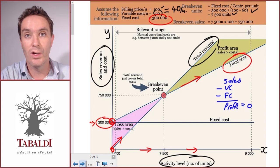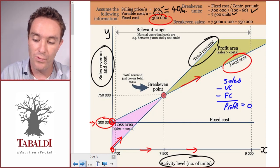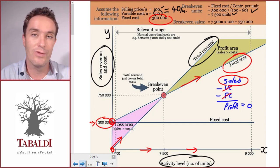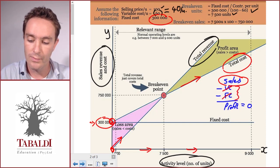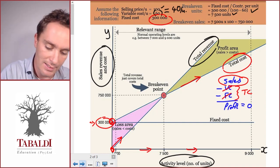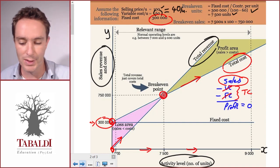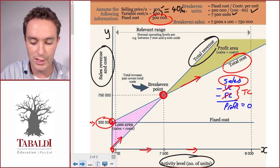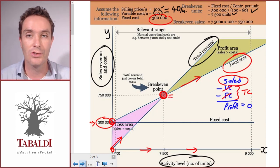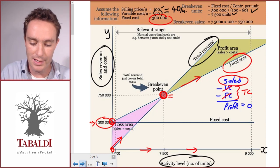When do we break even? If our profit is zero. When will our profit be zero? If we earn enough sales revenue to cover both our variable and our fixed costs, or our total cost. You can see that here in the middle, where our total cost is exactly the same as our total revenue.